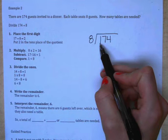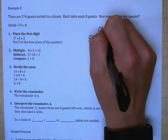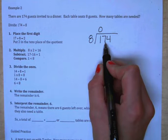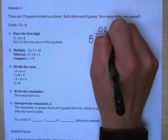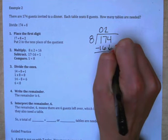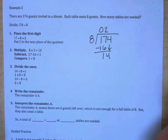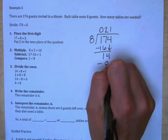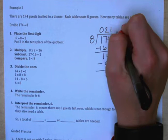Once again, 8 does not go into 1, so you need to move over to the tens place. 17 divided by 8 doesn't work out equally, but we know that 8 times 2 is 16, so we can subtract 16, bring down our 4. 8 goes into 14 one time. Subtract 8, and we are left with a remainder of 6.